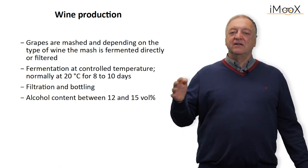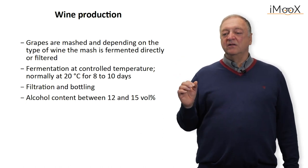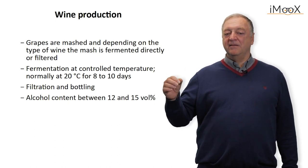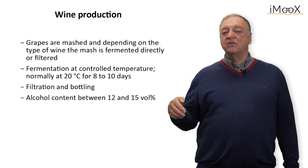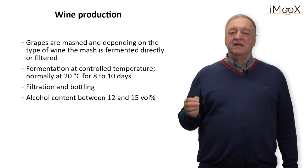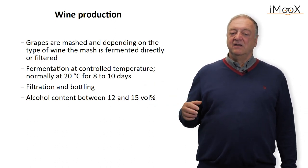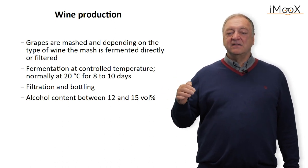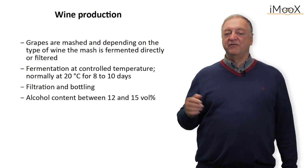Wine fermentation is carried out at around 20 degrees centigrade for one to two weeks, after which the wine is filtered and transferred into bottles or barrels for prolonged storage. The alcohol content of wine is normally in the range of 12 to 15 percent. At 17 percent alcohol the yeast are normally inhibited, so higher concentrations cannot be achieved by fermentation alone.